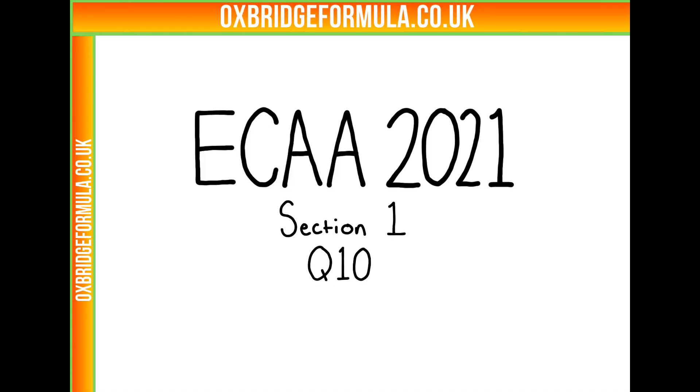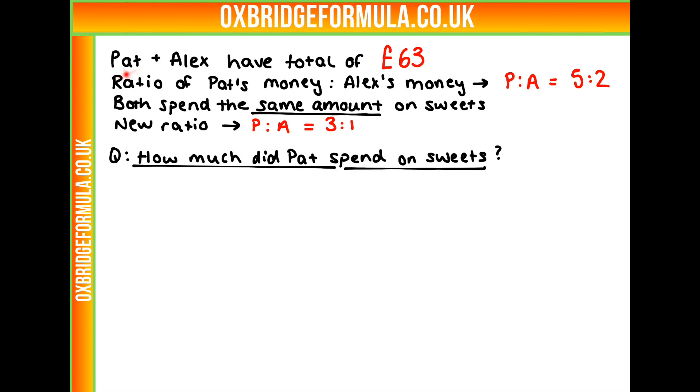This is ECAA 2021, section 1, question 10. We're told that Pat and Alex have a total of £63 between them. The ratio of Pat's money to Alex's money is 5 to 2, and they both spend the same amount on sweets. Afterwards, the new ratio of their money is 3 to 1, and we're asked to calculate how much did Pat spend on sweets.